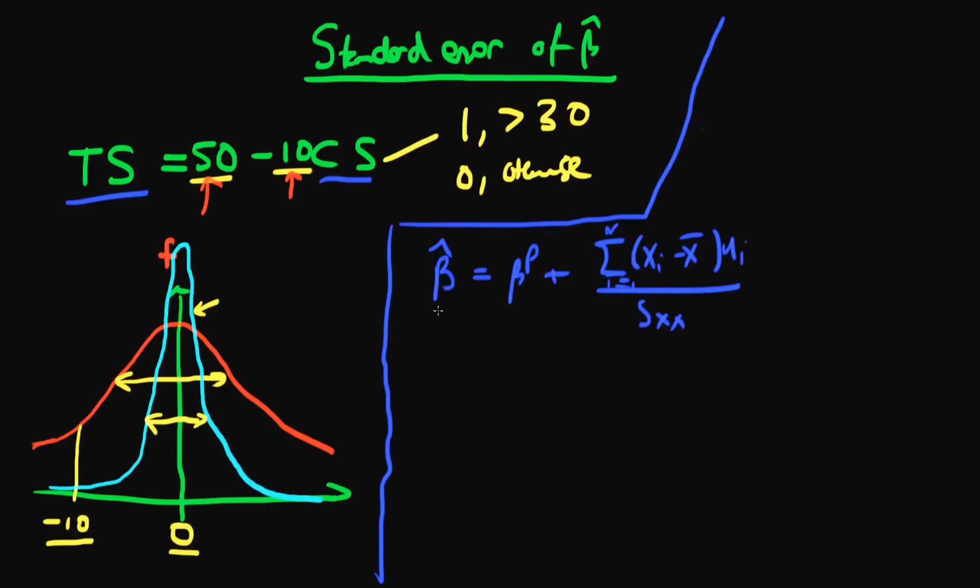And we're interested in finding the variance of beta hat. So what we can do is we can take the variance of both sides and we say that the variance of beta hat given xi is equal to, well the variance of this first term beta p is 0. And also the covariance between this first term and the second term is also equal to 0. The intuition here is that beta p is itself just a constant, it's a number, it doesn't vary or co-vary with anything. So the variance operator just passes straight through that and it becomes 0.